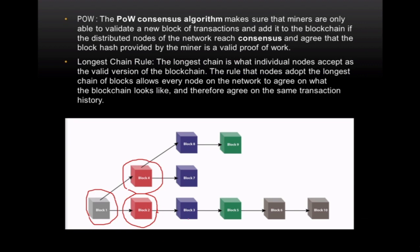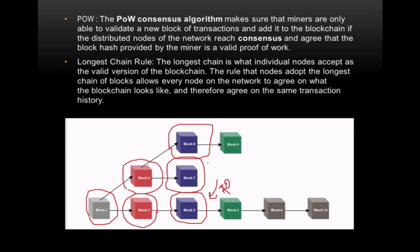Once those competing blocks exist, the next set of miners will see either block two or block four and start working on whichever they see. This creates a possibility that multiple blocks are created on competing chains. If more than 70 percent of miners work on one block and only 10 percent on another, the block with more miners has a much higher chance of getting the next block mined.